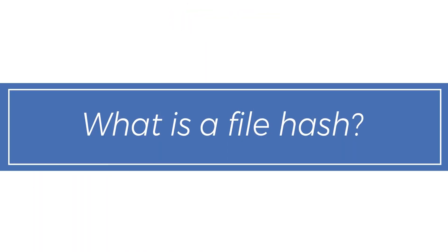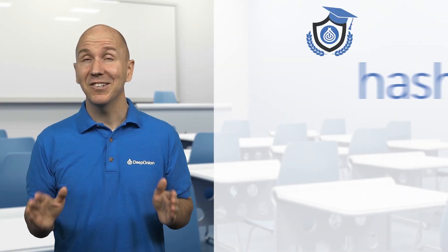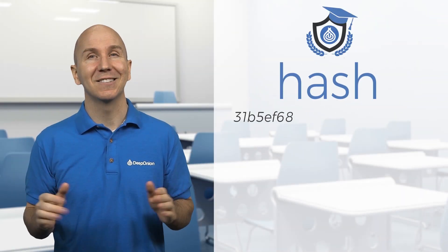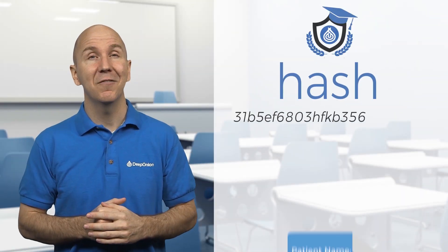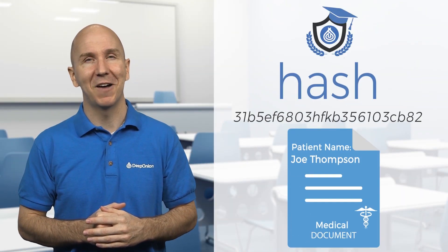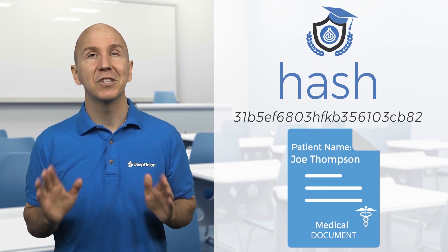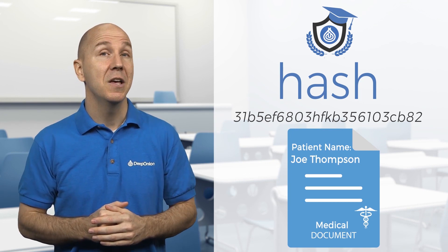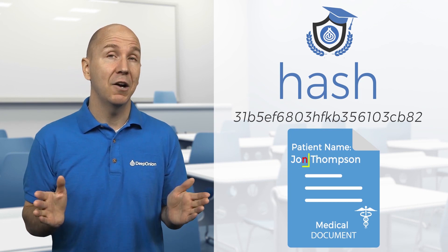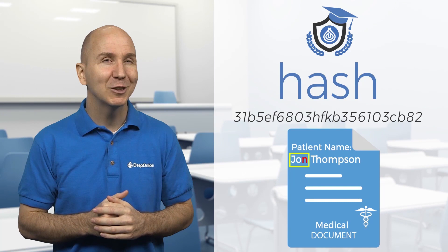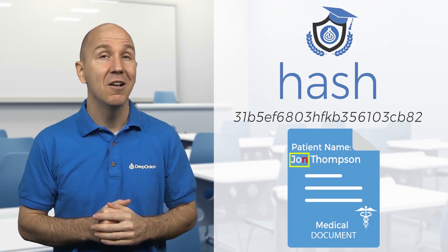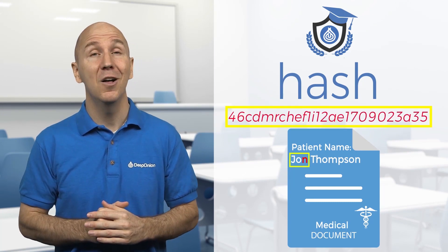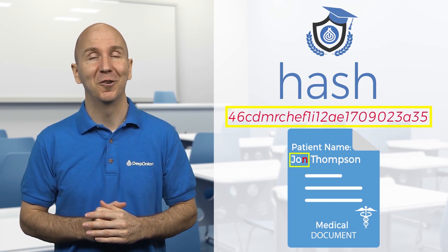What is a file hash? A hash is a string of text generated from the contents of a file. Each file generates a different hash. If you change the file, no matter how small the change, the whole hash of that file will be altered.